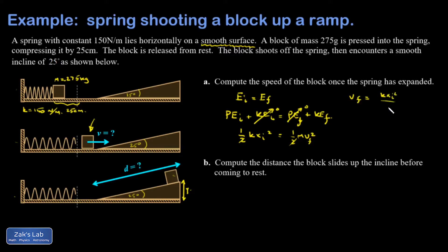So kx initial squared over m square rooted. So it's going to be the square root of k, that's 150, x initial 25 centimeters, that's 0.25 meters squared, over my mass, which is 0.275 kilograms. And I get 5.84 meters per second.